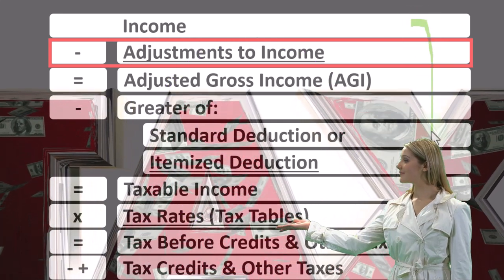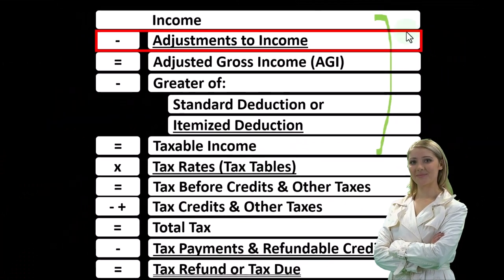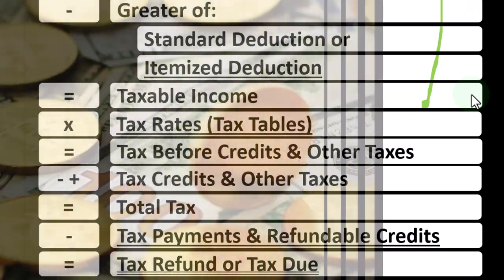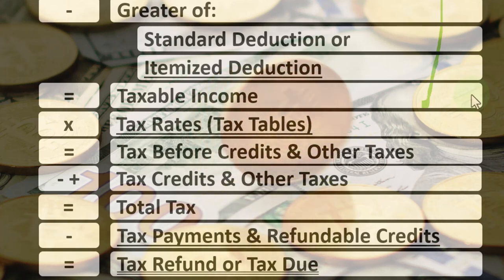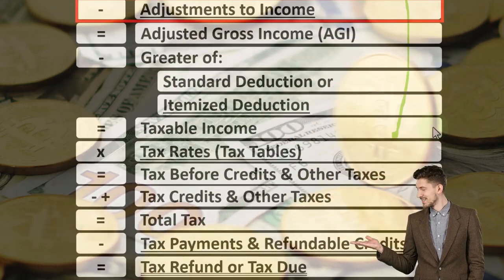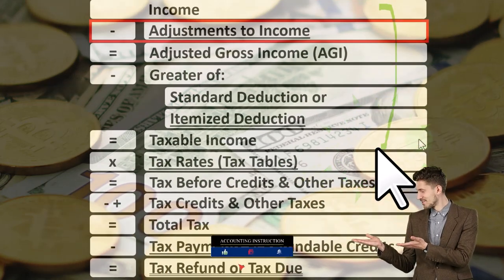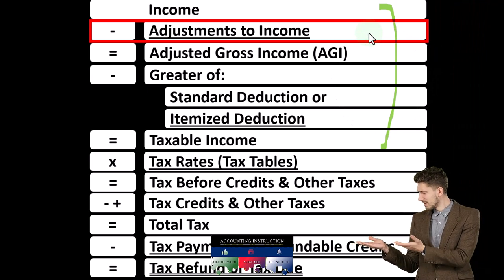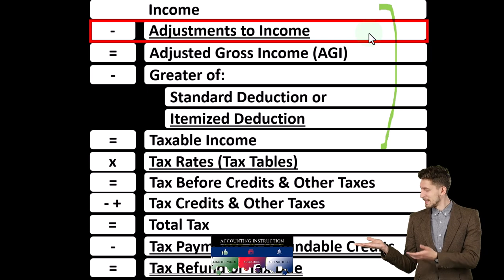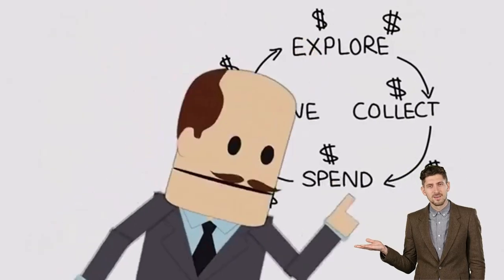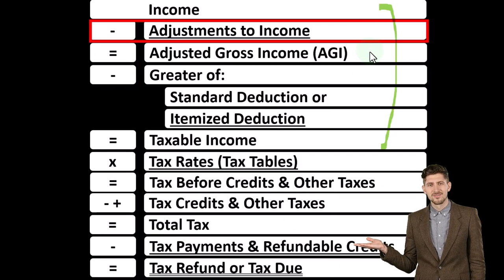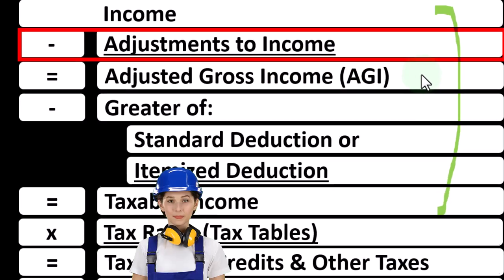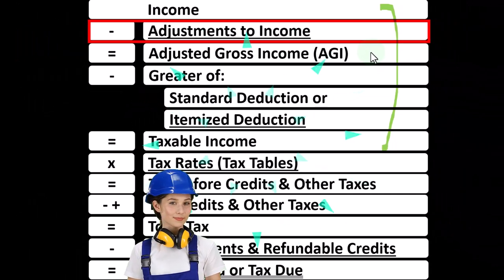Remember, the first half of the formula is essentially an income statement where we have income minus deductions, getting us to the equivalent of net income — that being taxable income. Our goal is flipped: we want taxable income as low as possible. We call this second item adjustments to income — you might hear them called above-the-line deductions or Schedule 1 deductions. They decrease income to get down to that key number: the AGI, the adjusted gross income.